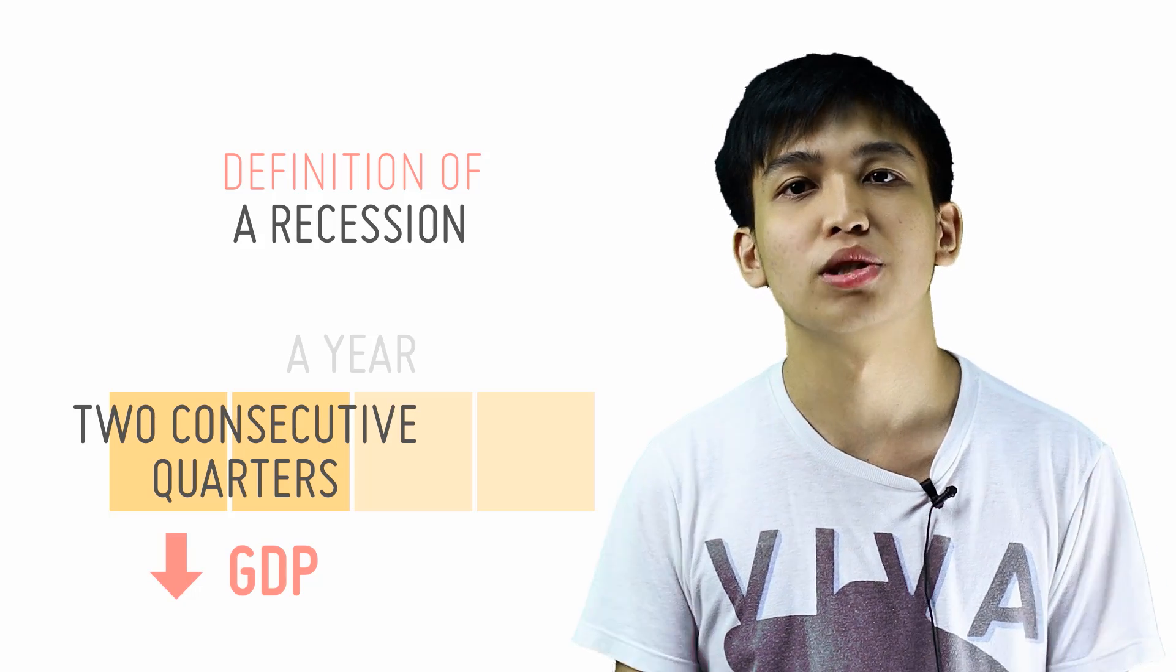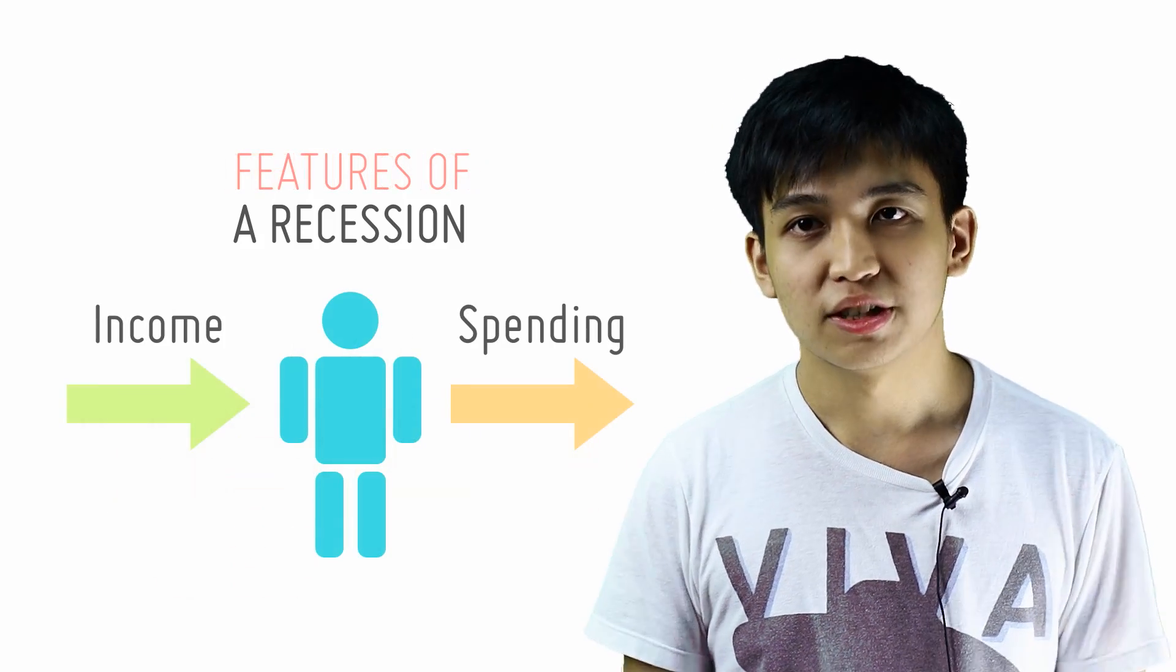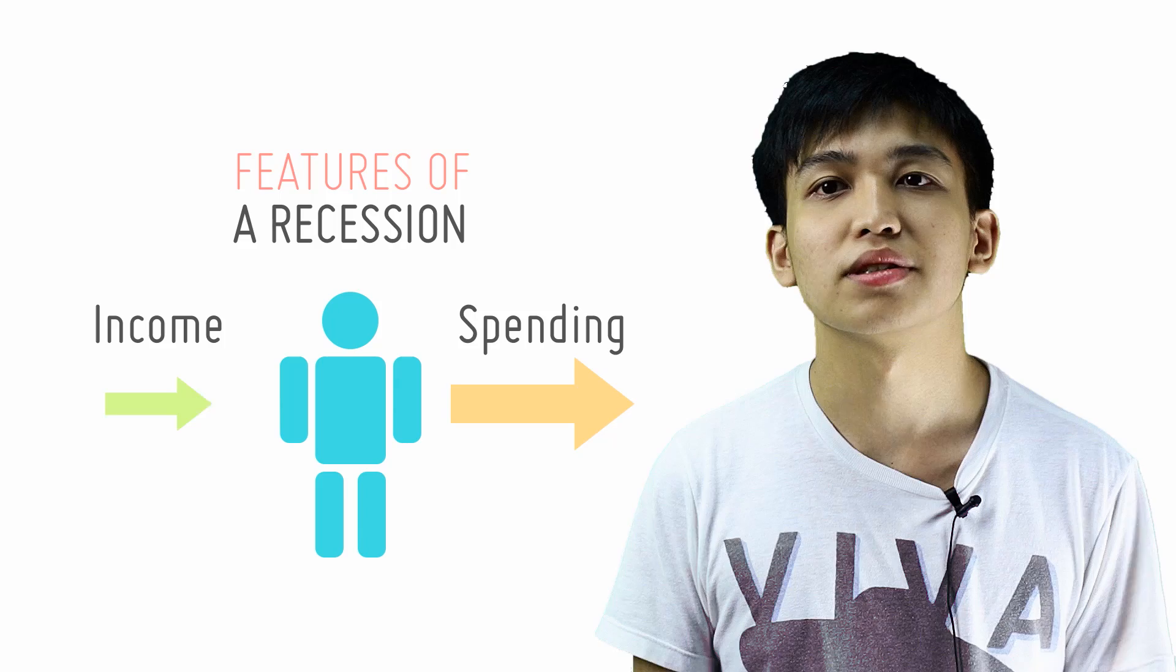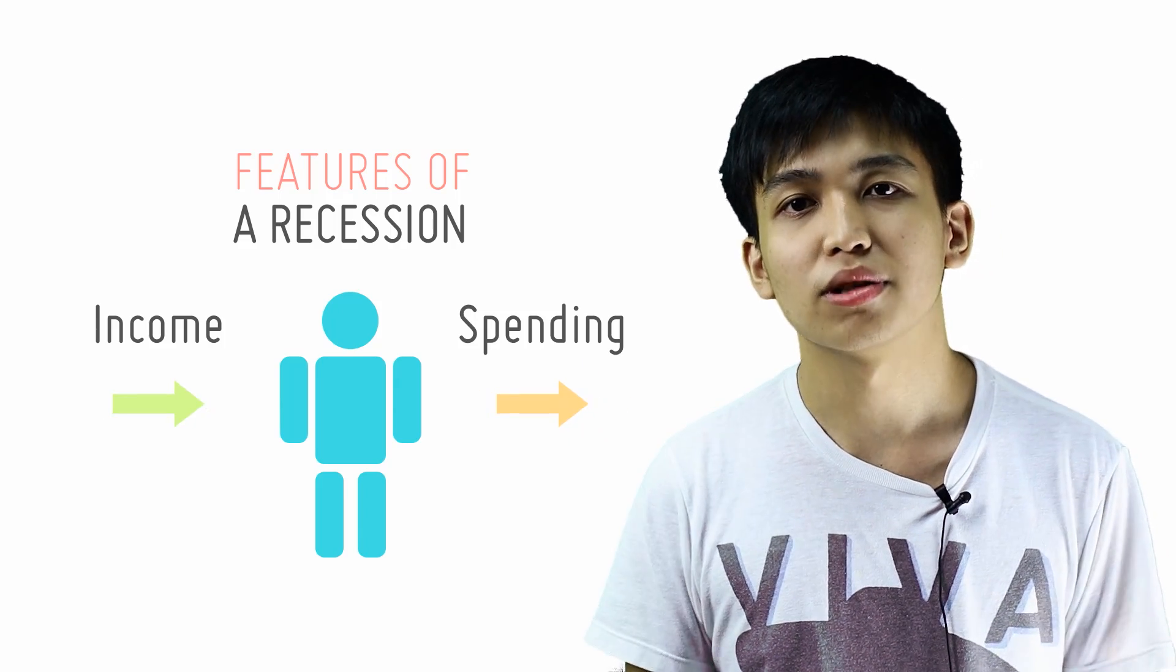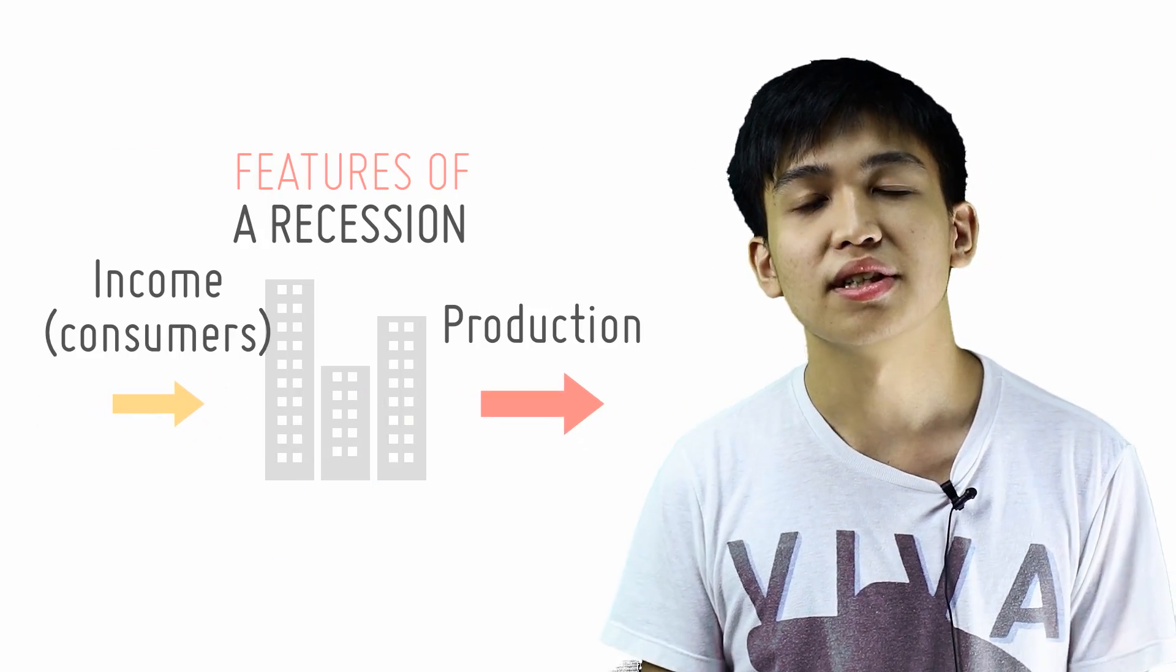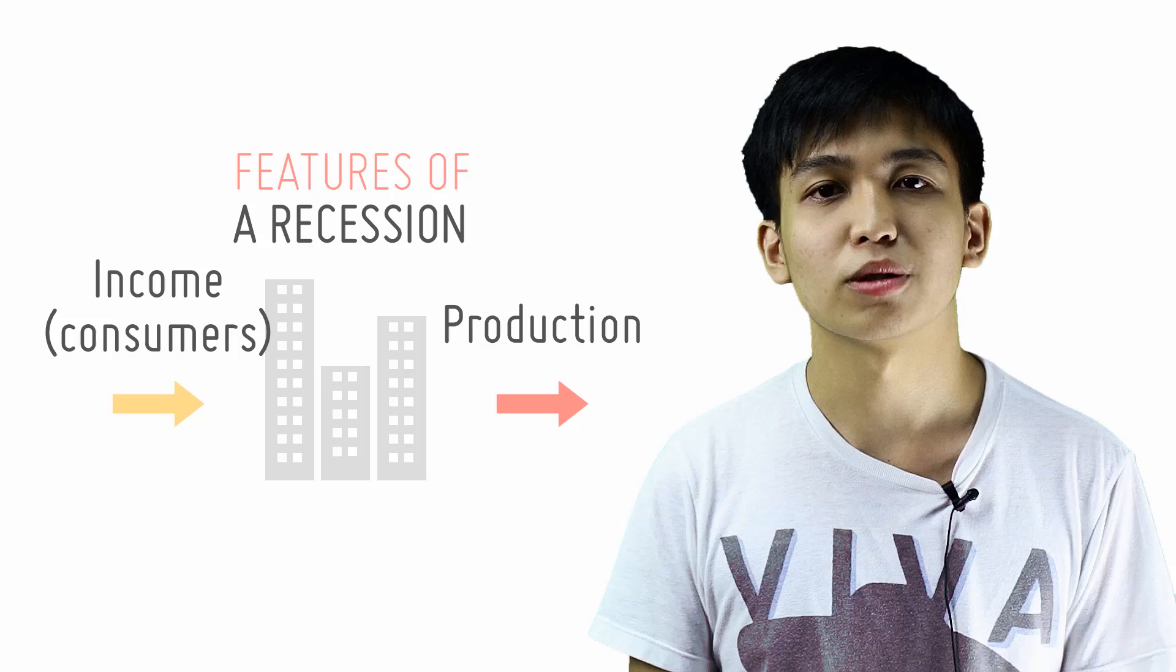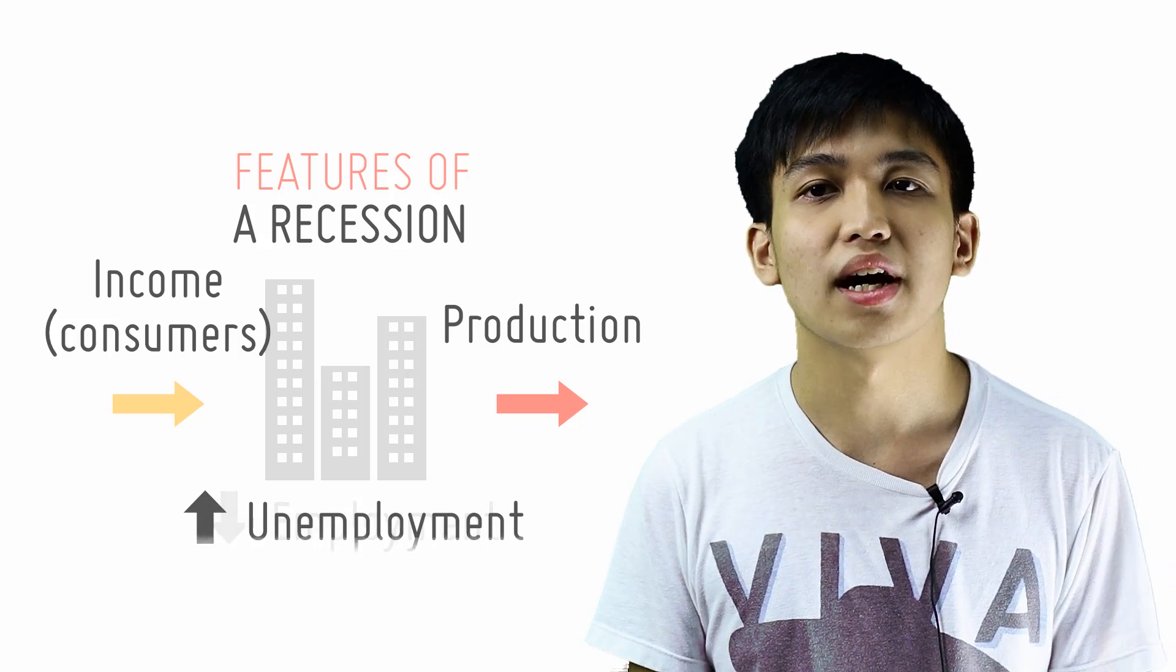What is the macroeconomic picture during a recession? During a recession, as a result of falling incomes, consumers spend less. This causes firms to cut down on production. Since labour is a derived demand, firms also hire fewer workers. Thus, unemployment increases.